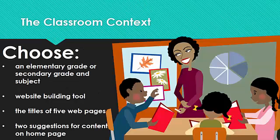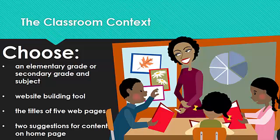Because online collaboration is one of the learning outcomes of the course, you will build a classroom teacher website with a small group of your peers. During week two, you will join a team and learn how to collaborate online. In week three, you and your team will determine the classroom context — deciding what elementary or secondary grade and subject your website will reflect, what website building tool you will use, and the titles of five web pages you will build. The main learning outcomes for the Educational Computing Level 1 course is to become proficient users of the Microsoft Office Suite. You will be required to investigate educational uses of Microsoft Word, Excel, and PowerPoint, and integrate at least one instance of each throughout the website.